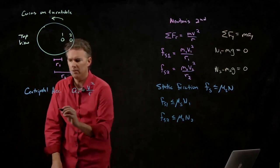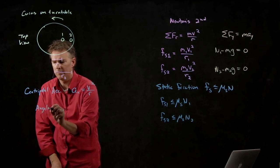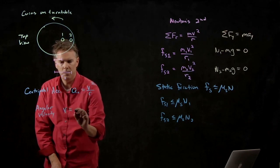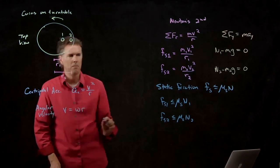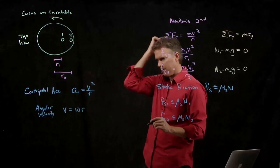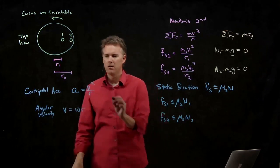And the way we rewrite this is through our good old angular velocity. V is equal to omega times R. If I take this relationship and I put it into here, what do I get?